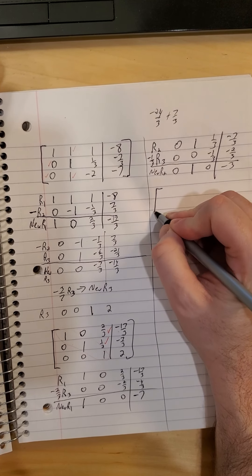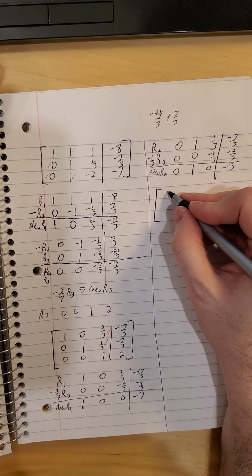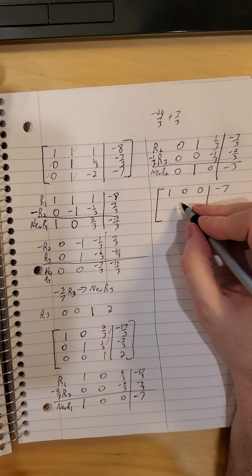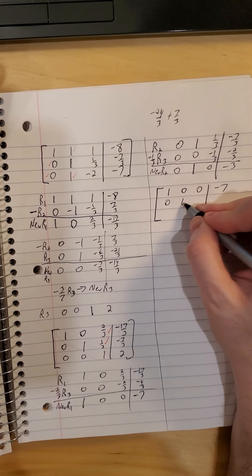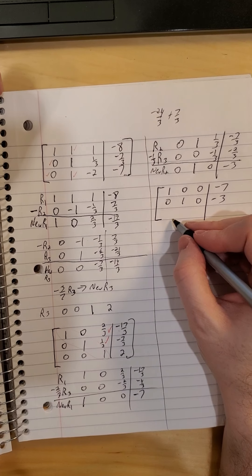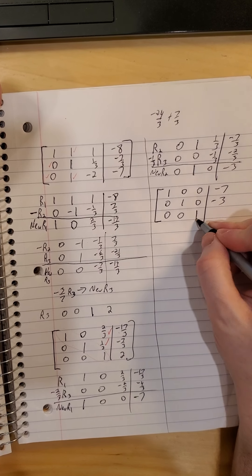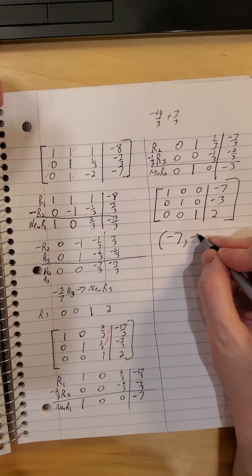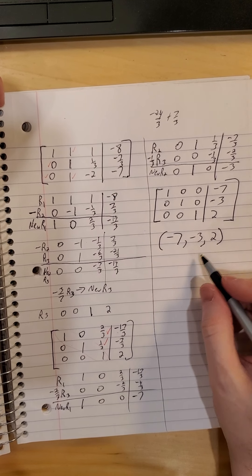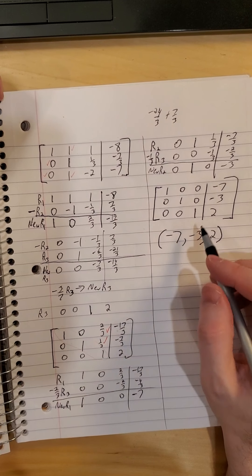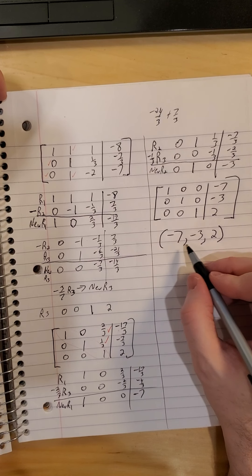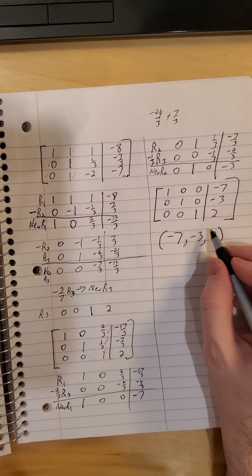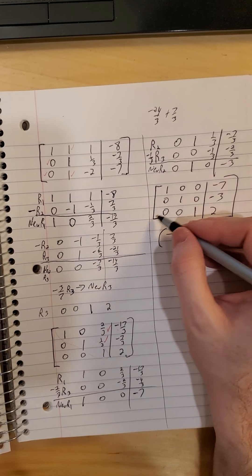So our last version of the matrix before our solution. New row 1, 1, 0, 0, negative 7. New row 2, 0, 1, 0, negative 3. And row 3, 0, 0, 1 on the diagonal and a 2. So our solution set is the ordered triple, negative 7, negative 3, positive 2. The ordered triple. The order does matter. This is equivalent saying x is negative 7, y is negative 3, z is positive 2. A different order would mean something different. So we want 1's in the diagonal, 0's everywhere else.